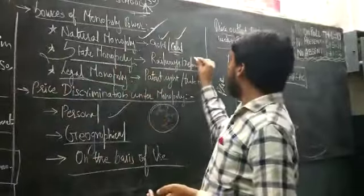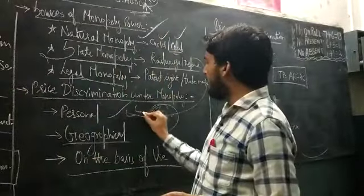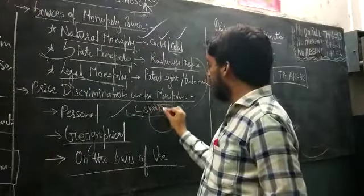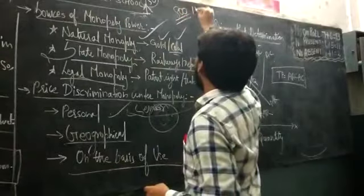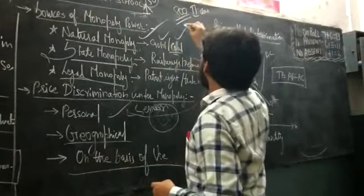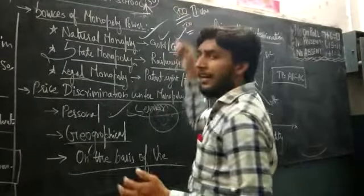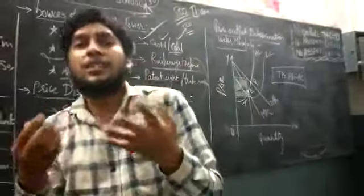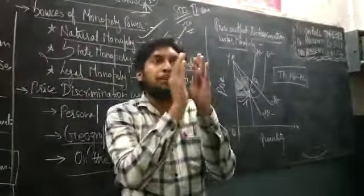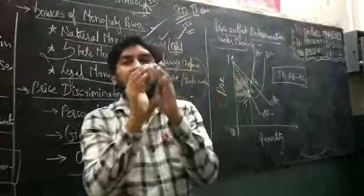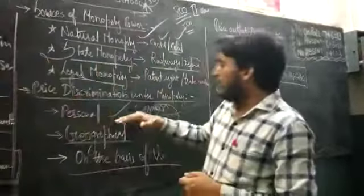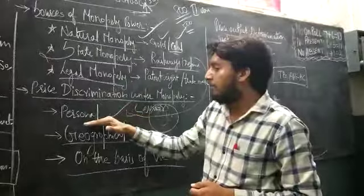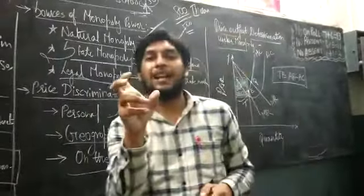Take example of Indian railways. For senior citizens, there is a concession. If I am paying 800 rupees for a second class, senior citizens pay 500. 300 discount for a senior citizen. So, based on the person, based on the gender, based on the age, based on the criteria, based on the profession, some price is fixed. That is what we call personal price distribution.